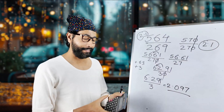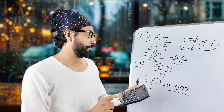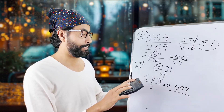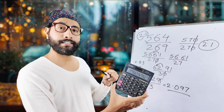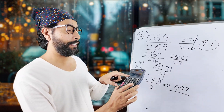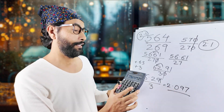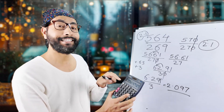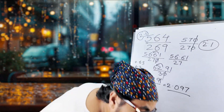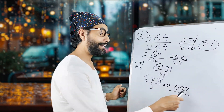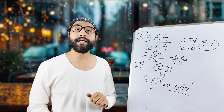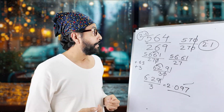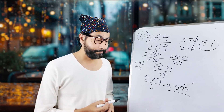Let me check it with the calculator. The actual value of 564 divided by 269 is 2.096. Our answer was 2.097 — we're extremely close. Even up to three decimal digits it is absolutely correct. You won't always get a perfectly exact value, but you'll get very close.